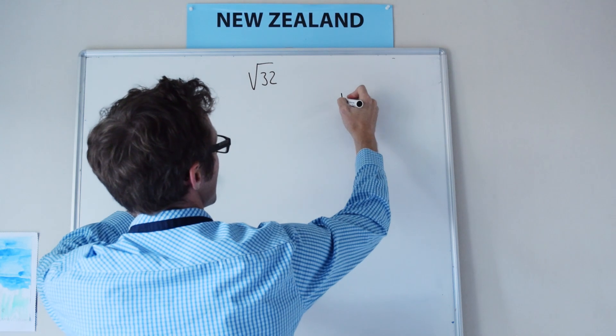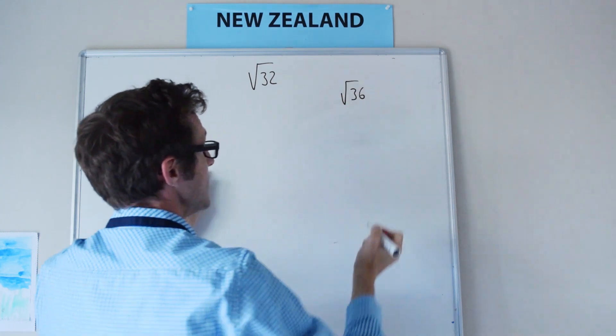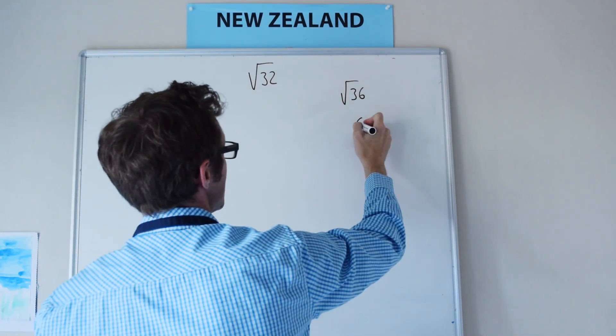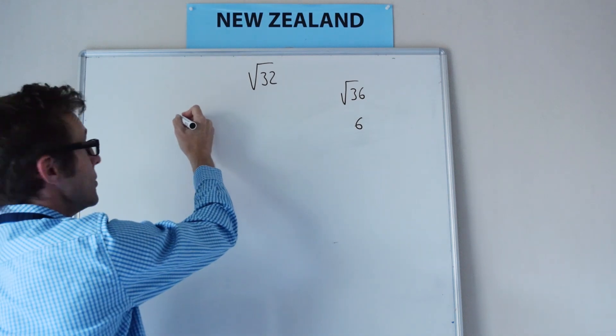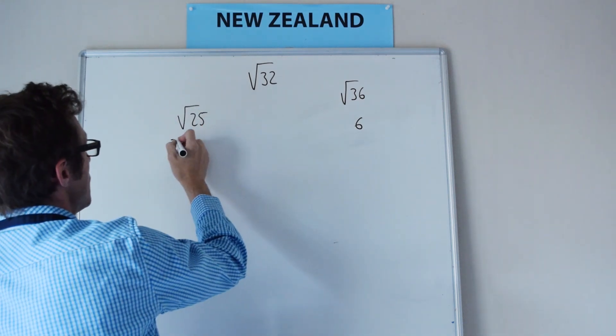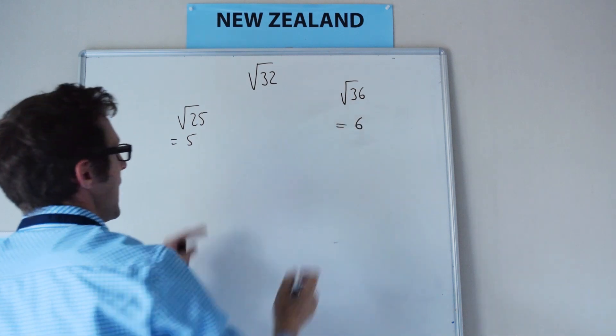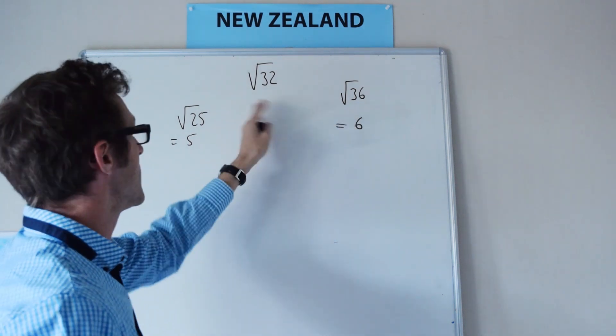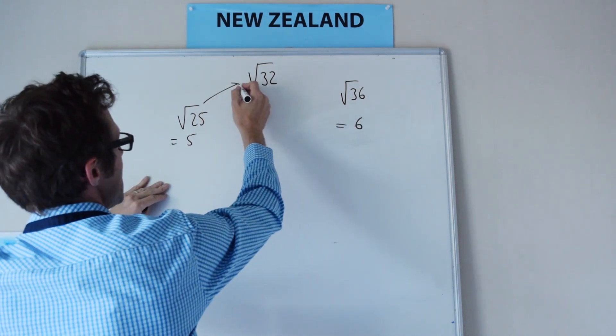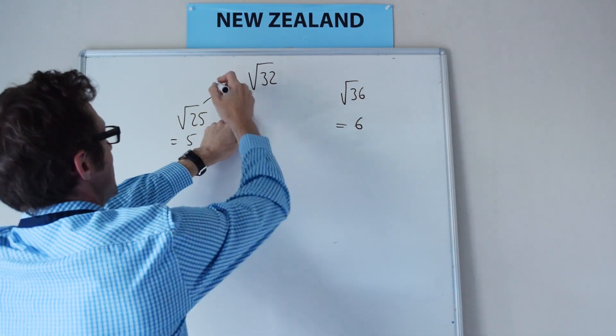You know on one side of it the square root of 36 is equal to 6, and on the other side of this you know that the square root of 25 is equal to 5, and you can see that this is in between these two. To get from here to here is 7, and to get from here to here is 4.